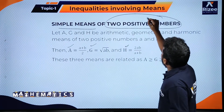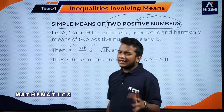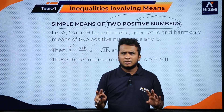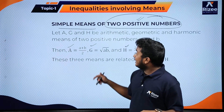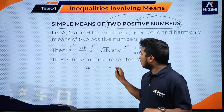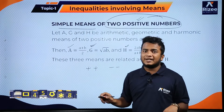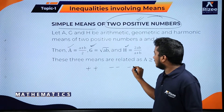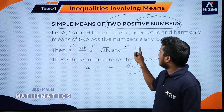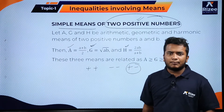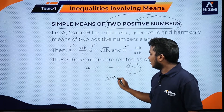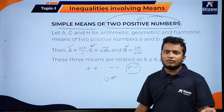Why positive numbers? You can calculate AM of any numbers — positive, negative, or zero. You can also calculate GM of two positive numbers or two negative numbers, but GM of one positive and one negative number cannot be calculated. HM can also be calculated for positive or negative numbers, but zero should not be involved in HM.